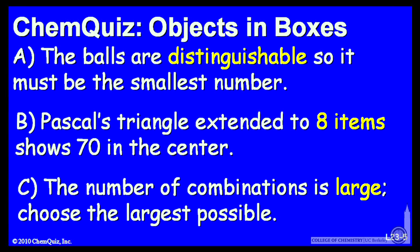Let's look at a possible explanation for each answer. A, the balls are distinguishable, so it must be the smallest possible number. B, Pascal's triangle extends to eight items, shows 70 in the center. Or C, the number of combinations is large, so choose the largest possible.